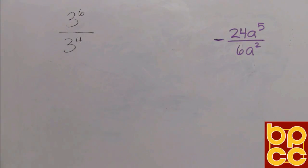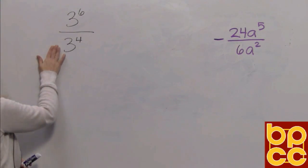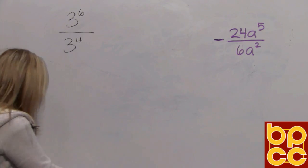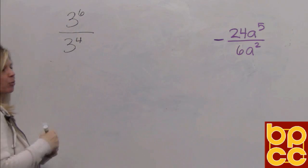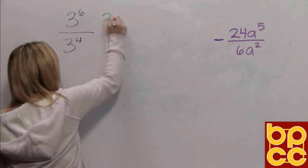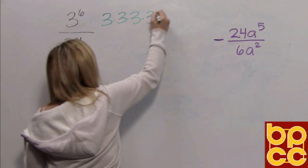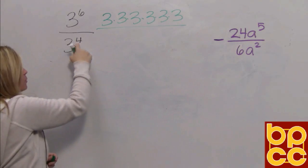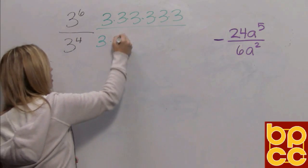Let's take it back to arithmetic. If I have three to the sixth, then I want to divide it by three to the fourth. What does that mean? Well, if we use our basic skills, we know this exponent means to write the three six times. In the denominator, three to the fourth means write that base four times.